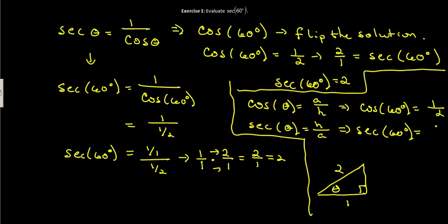Which means that the secant of 60 should be equal to the hypotenuse, 2, over the adjacent which is 1, which also then gives you a value of 2.